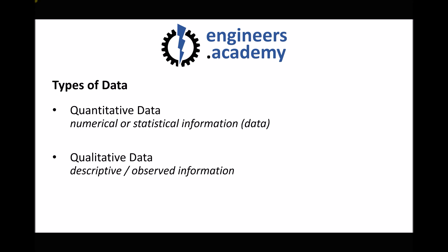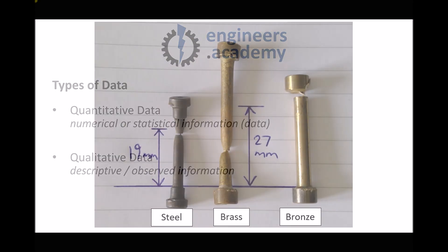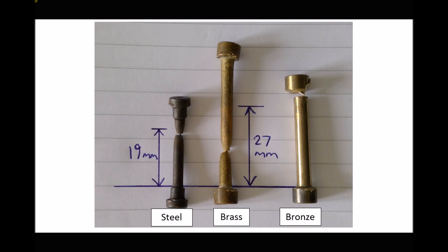The second type of data was qualitative data. On the screen here are three test pieces that have undergone an ultimate tensile strength test. When we look at these samples, we can gain information that isn't quantitative. For example, I could look at these three test pieces and make predictions around which was more brittle, more suitable for drawing into a wire, or which would be softer, more malleable, and easier to shape.